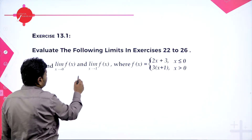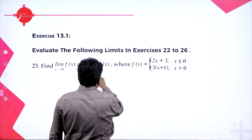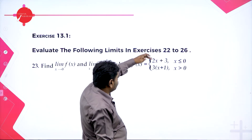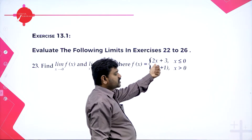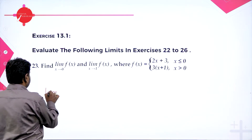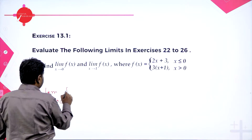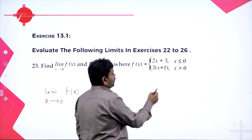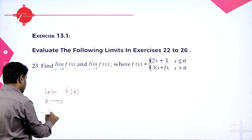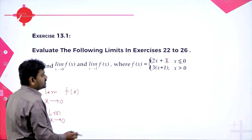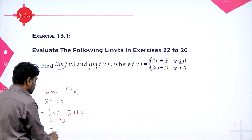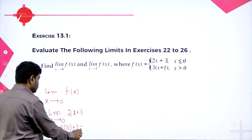Next, we find limit x→0 of f(x) and limit x→1 of f(x) where f(x) has two values. When x ≤ 0, the function is 2x + 3; when x > 0, it is 3(x + 1). For limit x→0: since x = 0 satisfies x ≤ 0, we use f(x) = 2x + 3. Substituting x = 0 gives 2(0) + 3 = 3.